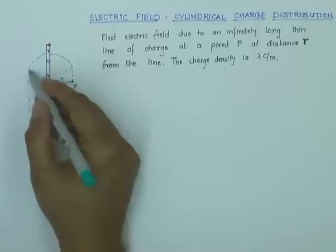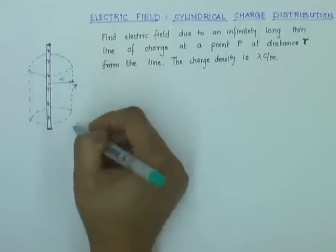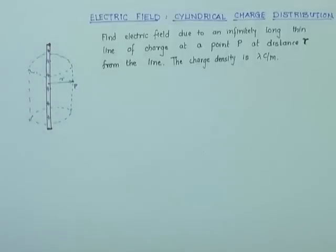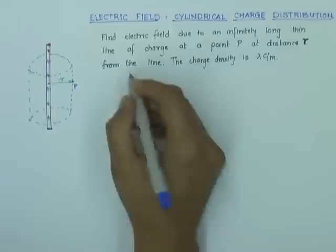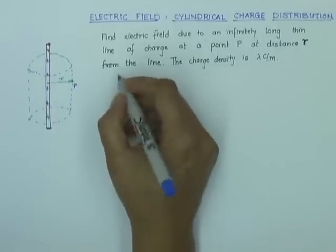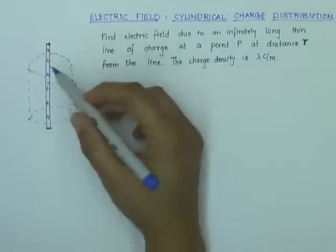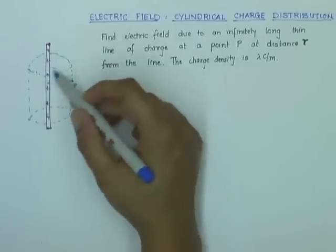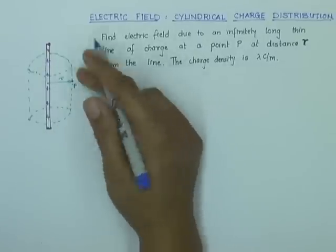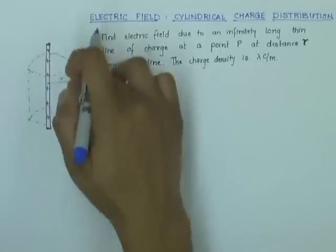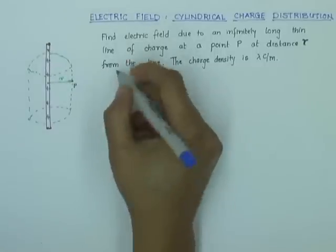This is the top surface of the cylinder and this is the bottom surface of the cylinder. Let us see how we can write Gauss's Law over this cylindrical surface. It is a closed surface — the top surface is closed, the bottom surface is closed, and this is the curved side of the cylinder.